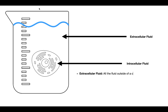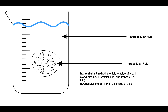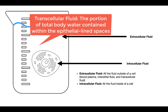The second is the intracellular fluid, or the fluid contained inside the cell. So inside our bodies, the extracellular fluid is the fluid outside of a cell, and it consists of the blood plasma, the interstitial fluid (the fluid around the cells), and transcellular fluid. The intracellular fluid is the fluid inside the cell.